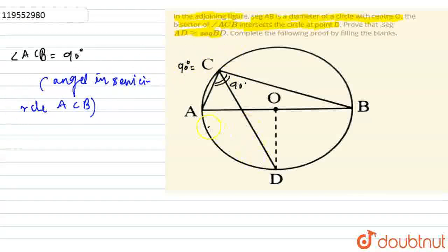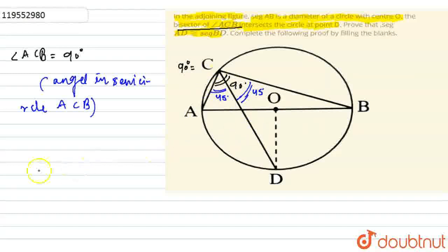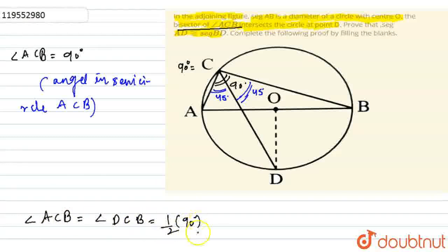CD is the bisector of angle ACB. The bisector of angle ACB — point D is on the circle. So this angle value is 45 degrees. Because of the bisector, this angle is 45 degrees. Hence angle DCB equals 45 degrees and angle ACD is also equal to 45 degrees. Angle ACD equals angle DCB equals half of 90 degrees, because of the bisector, which equals 45 degrees.